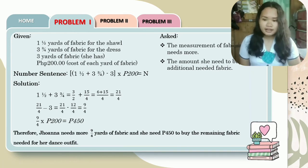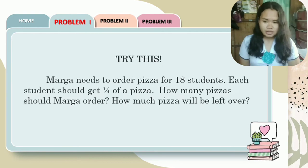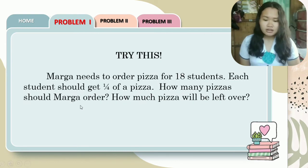For your seat work, try this. In a one-half sheet of paper, solve this: Marga needs to order pizza for 18 students. Each student should get one-fourth of a pizza. How many pizzas should Marga order? How much pizza will be left over?